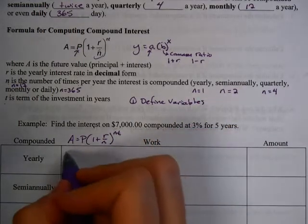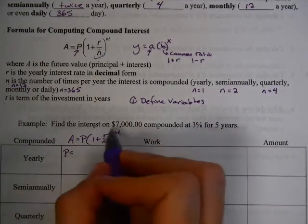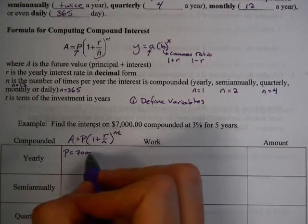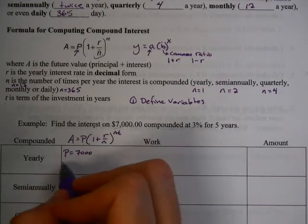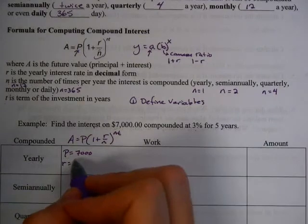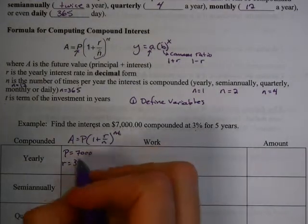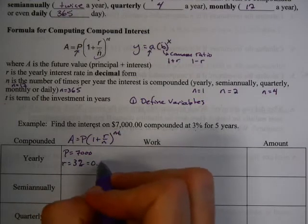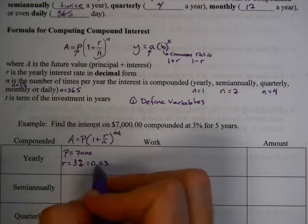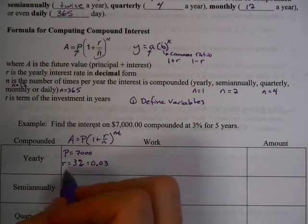Alright, well, P is going to be your principal. That's $7,000. That's how much we start out with. The rate, that's 3%. That's pretty easy to find, but remember, we don't multiply or divide with percent. So we're going to change that to a decimal, and all you do is divide by 100, and that gets it for you.